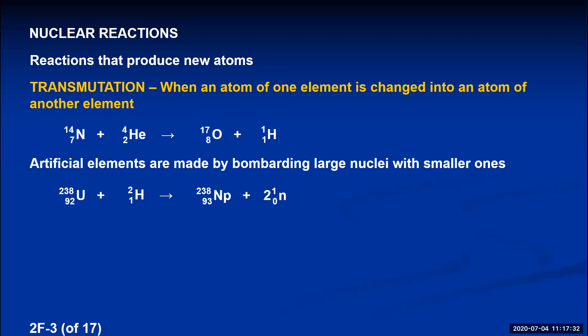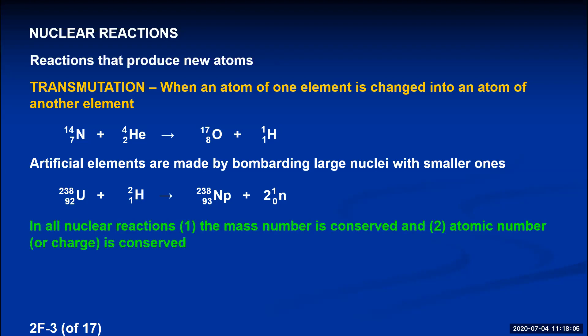Atomic numbers are also conserved. In the first reaction: nitrogen + helium gives 7 + 2 = 9, and oxygen + hydrogen gives 8 + 1 = 9. In the second: 92 + 1 = 93 on the reactant side, and 93 + 0 + 0 = 93 on the product side. So in all nuclear reactions: (1) mass number is always conserved, and (2) atomic number or nuclear charge is always conserved.